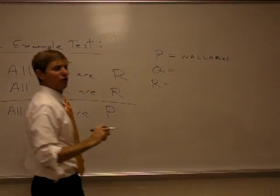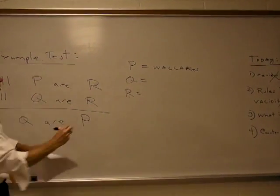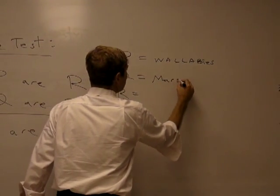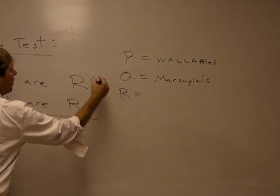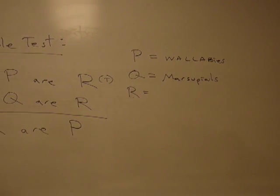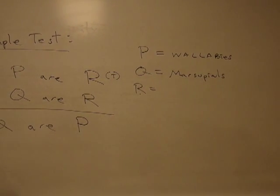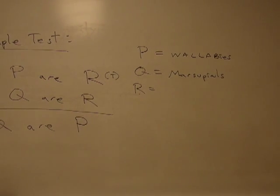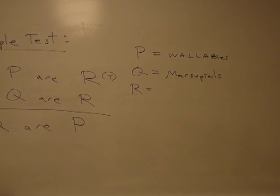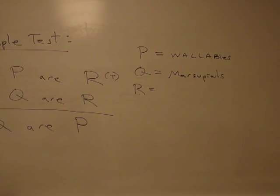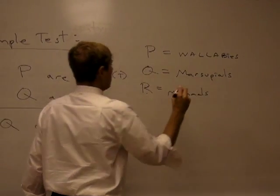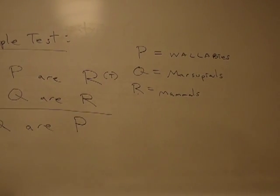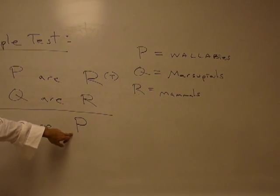Now what might we do here? Ah, our good friends, wallabies. All wallabies are marsupials. Turns out that we've made premise one true that way. Now we have to make premise two also true. All marsupials are mammals. Therefore, all marsupials are wallabies.